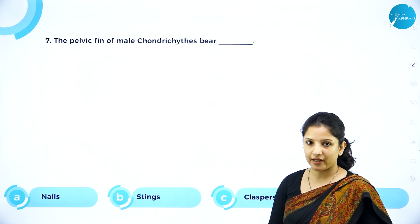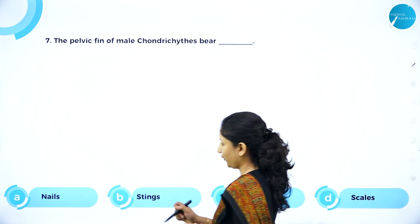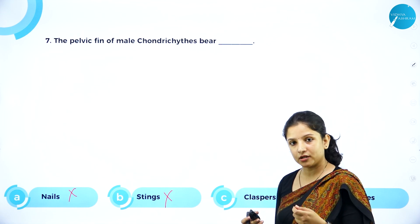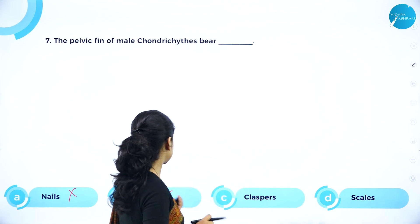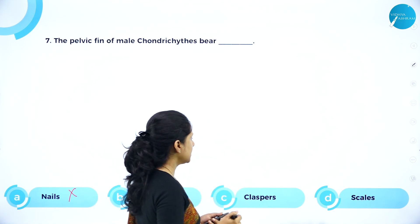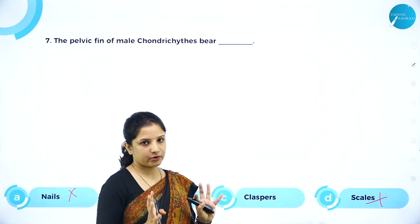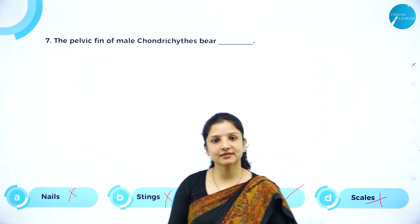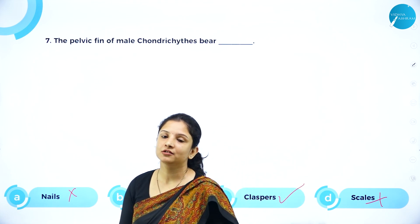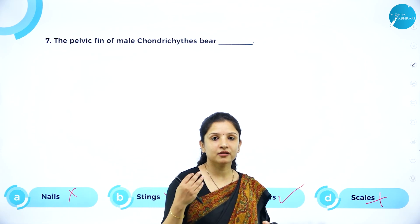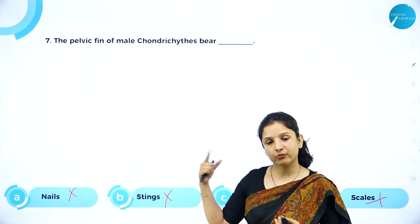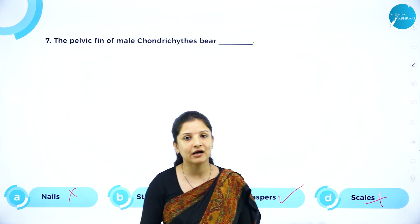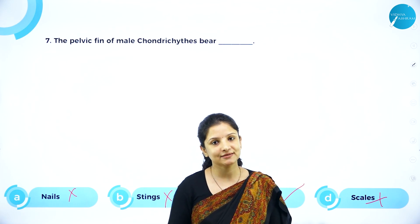MCQ: The pelvic fin of male Chondrichthyes bears — nails, stings, scales, or claspers? Claspers are present in the pelvic fin of males and help in copulation. So option C, claspers, is the right answer. This was the session on class Chondrichthyes under subphylum Vertebrata — remember they come under the order Gnathostomata. I hope you understood the session well. We shall meet again in the coming session to learn about one more class under subphylum Vertebrata. Thank you.